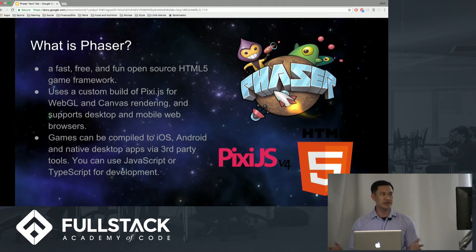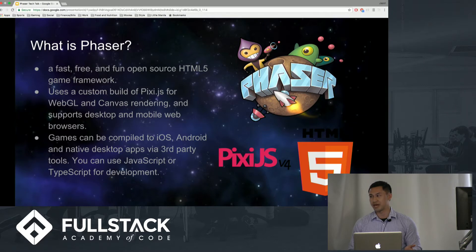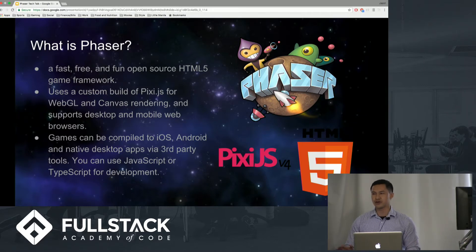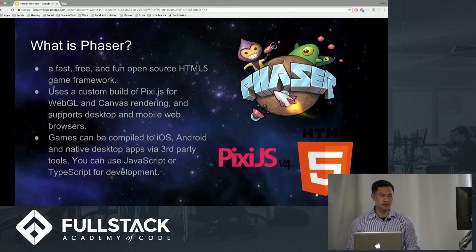What is Phaser? Phaser is a game framework that uses a custom build of Pixi.js for WebGL and Canvas rendering, and supports desktop and mobile web browsers. Pixi.js is a rendering library that allows you to create rich and interactive graphics across platform applications in games without having to dive into the WebGL API or deal with browser and device compatibility. The whole goal of Phaser when it was developed was actually trying to develop it with mobile in mind — it was developed for mobile first, then going into desktop. So it's supported by iOS and Android.